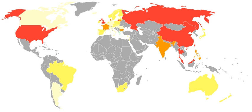They describe such things as personal diaries and letters needing protection, and how that should be done. Thus, the courts, in searching for some principle upon which the publication of private letters could be enjoined, naturally came upon the ideas of a breach of confidence, and of an implied contract. They also define this as a breach of trust, where a person has trusted that another will not publish their personal writings, photographs, or artwork, without their permission, including any facts relating to his private life which he has seen fit to keep private, and recognizing that technological advances will become more relevant. They write: "Now that modern devices afford abundant opportunities for the perpetration of such wrongs without any participation by the injured party, the protection granted by the law must be placed upon a broader foundation."